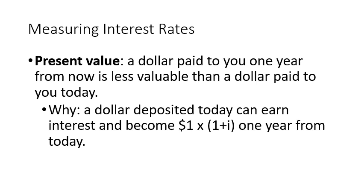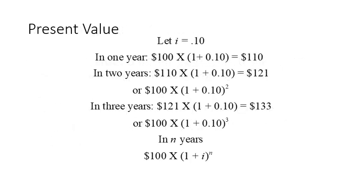A dollar deposited today can earn interest and became $1 plus the interest rate one year from today. How can we calculate this? It is simply represented as follows: the principal amount, in this case $1, plus this principal amount times the interest rate. So we can write it generally as $1 times (1 plus the interest rate). For example, assuming interest is 10%, if we deposit $100, by the end of the year it will be 100 times 1 plus 10%, which equals $110.